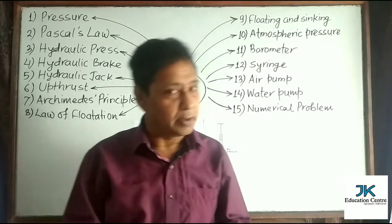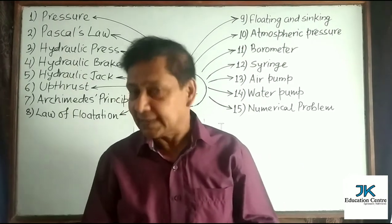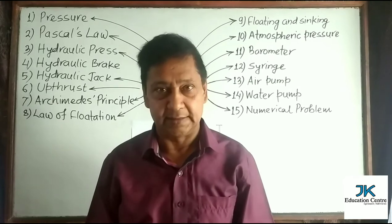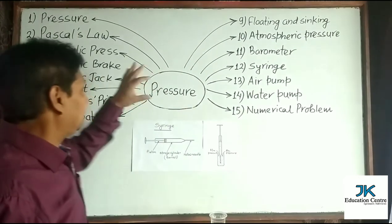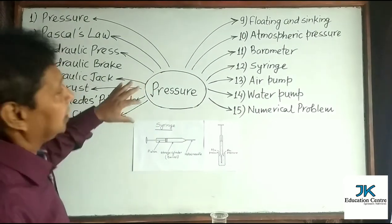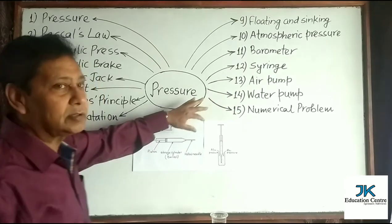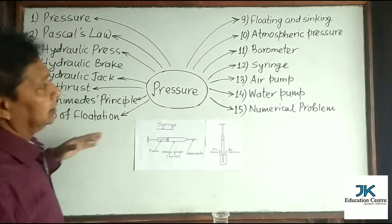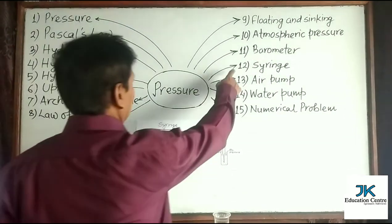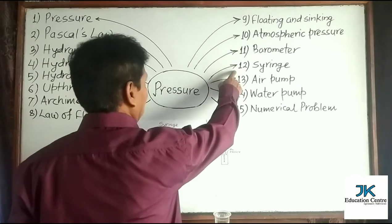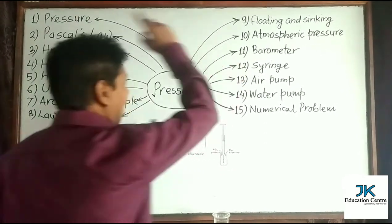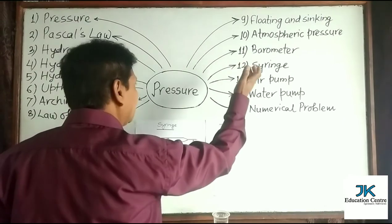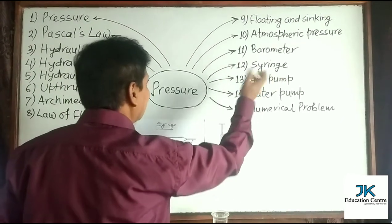This is the continuation of the previous class — the chapter on pressure in physics. I have divided this chapter into 15 different points according to the syllabus of class 10. We are now starting with point number 12, because up to point 11 I taught in the previous class. Now we are discussing points 12 and 13, that is syringe and air pump.